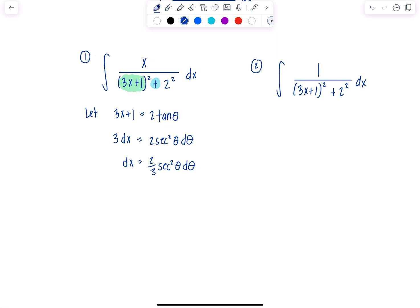Now what about this lonely little x in the numerator? You're going to come back right here, solve for x. That means 3x equals 2 tan theta minus 1. So x equals 1 third times 2 tan theta minus 1. That's going to go in the numerator.